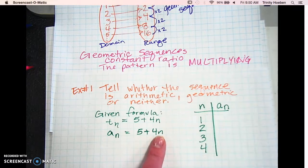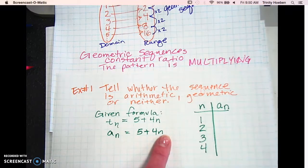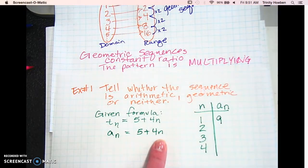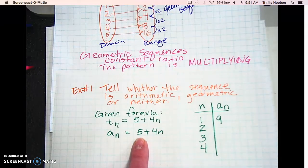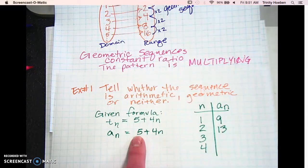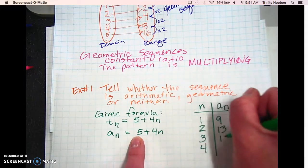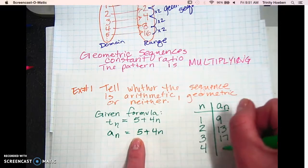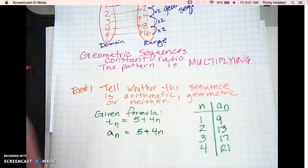So if we plug in 1 here, what's 4 times 1? 4. Plus 5? 9. Now let's plug in 2. What's 4 times 2? 8 plus 5? 13. Now let's plug in 3. 4 times 3? 12. 12 plus 5? Good. And now let's plug in 4. 4 times 4? 16, right? And 16 plus 5? 21.